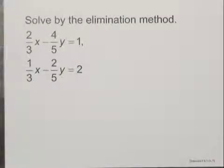Solve by the elimination method. We have the system of equations two-thirds x minus four-fifths y equals one, and one-third x minus two-fifths y equals two.